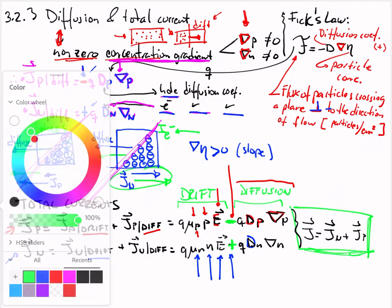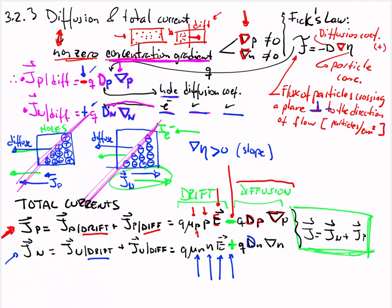The total current density inside the semiconductor is the sum of JN and JP. For holes: drift (with electric field, negative sign) plus diffusion. For electrons: drift plus diffusion (positive). The total current combines holes plus electrons: J_total = JP + JN. Now we can find the total current density inside a semiconductor.